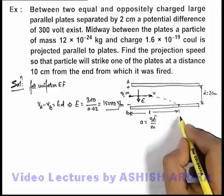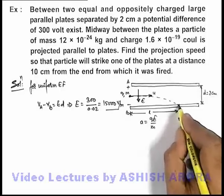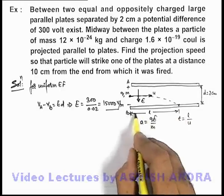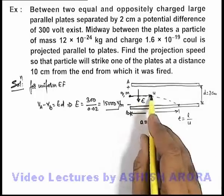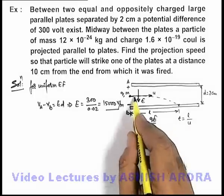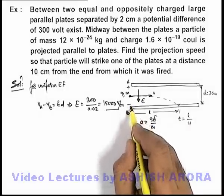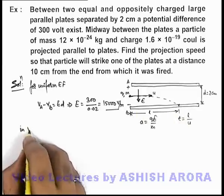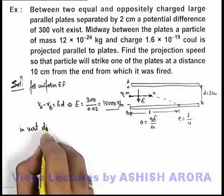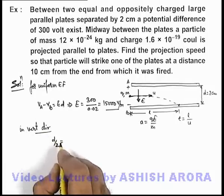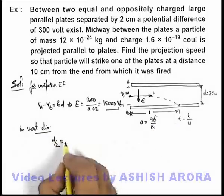The time at which it will hit the plate can be directly given as L/u, because the distance L it has traveled with constant speed u. In the same time, in the vertical direction it has traveled a distance d/2. So in the vertical direction, the distance d/2 is covered with acceleration qE/m, which can be written as (1/2)at².